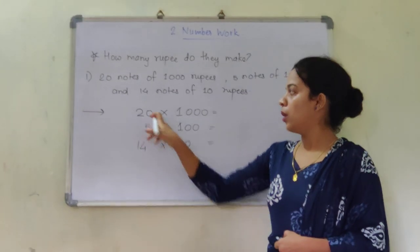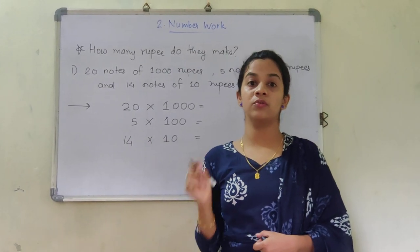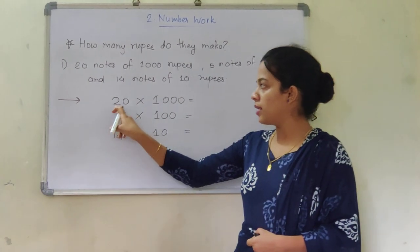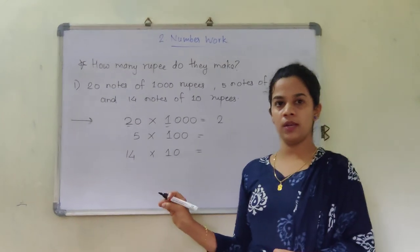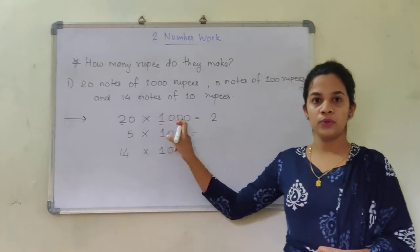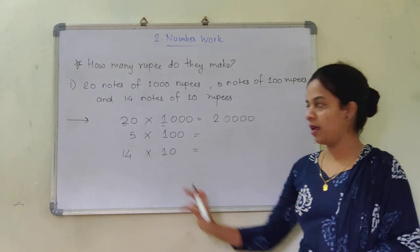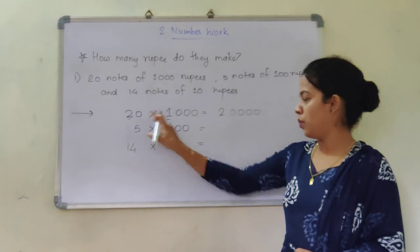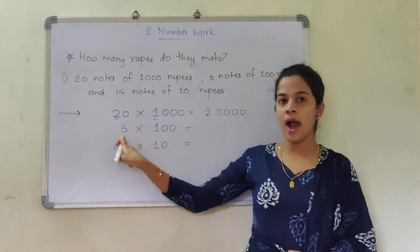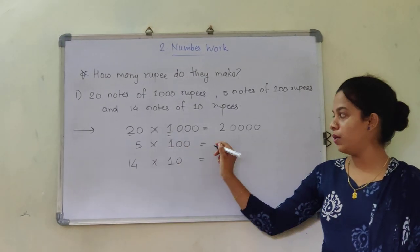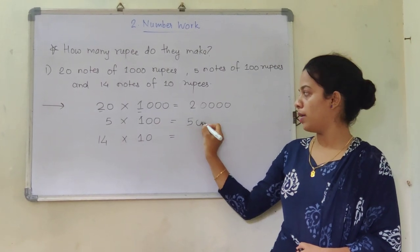We will just see the calculation. 20 into 1,000 — are you going to solve it by the multiplication method? I showed you a small trick earlier. You can see here: 2 and 1. 2 ones are 2. How many zeros are here? There is 1 zero in 20 and 3 zeros in 1,000. 1 plus 3 is 4, so we write 4 zeros at the back: 20,000. Now 5 into 100 — 5 into 1 is 5, and there are 2 zeros, so it is 500.